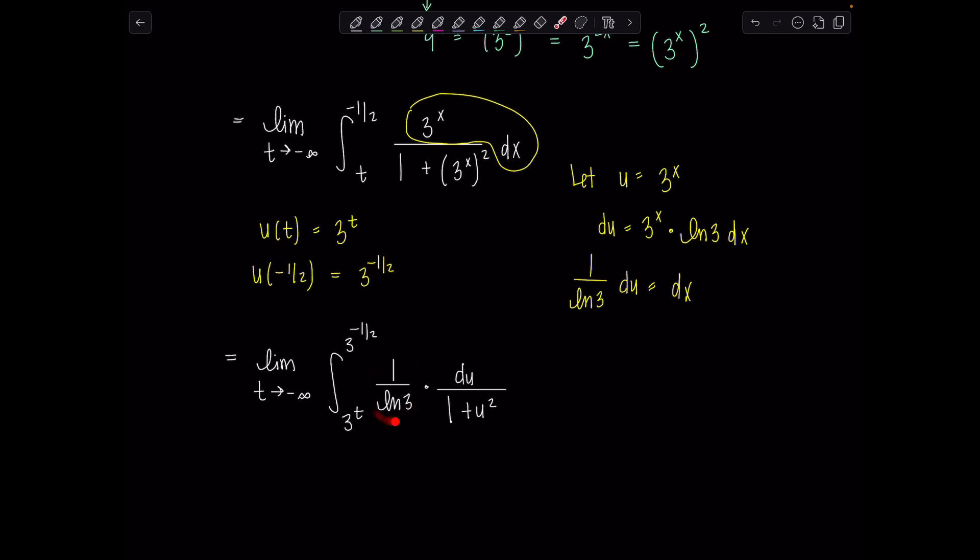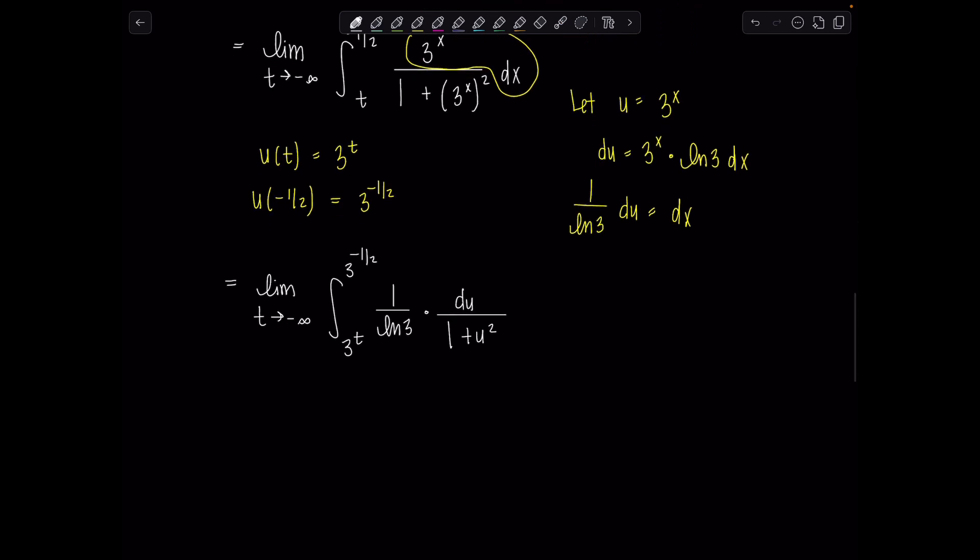So this is just a constant. We should all know by now anti-derivative of 1 over 1 plus u squared. Yes, it's our good friend tan inverse of u. Okay, so keep this limit the whole time until you evaluate it. Limit t goes to negative infinity 1 over ln of 3 and then we've got tan inverse of u evaluated from 3 to the t to 3 to the negative one-half.